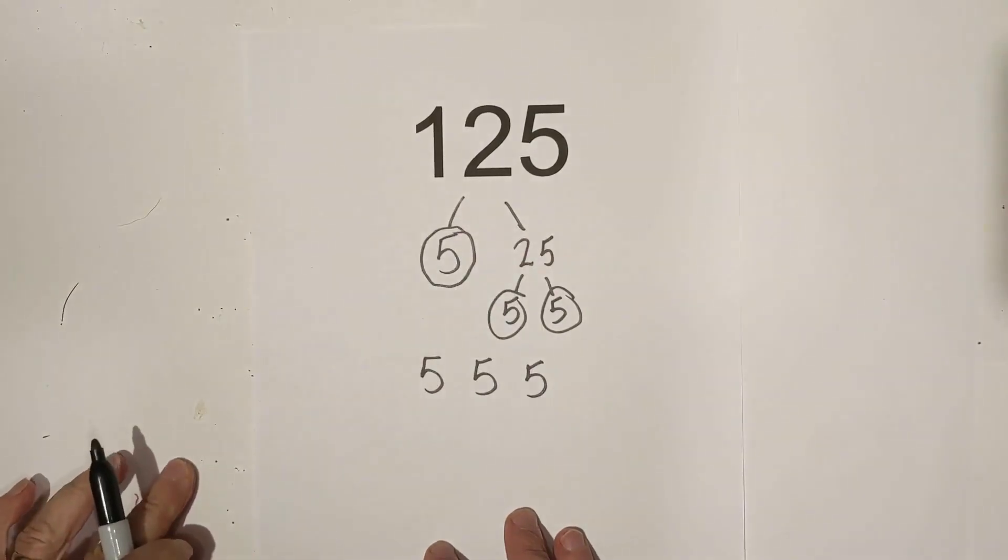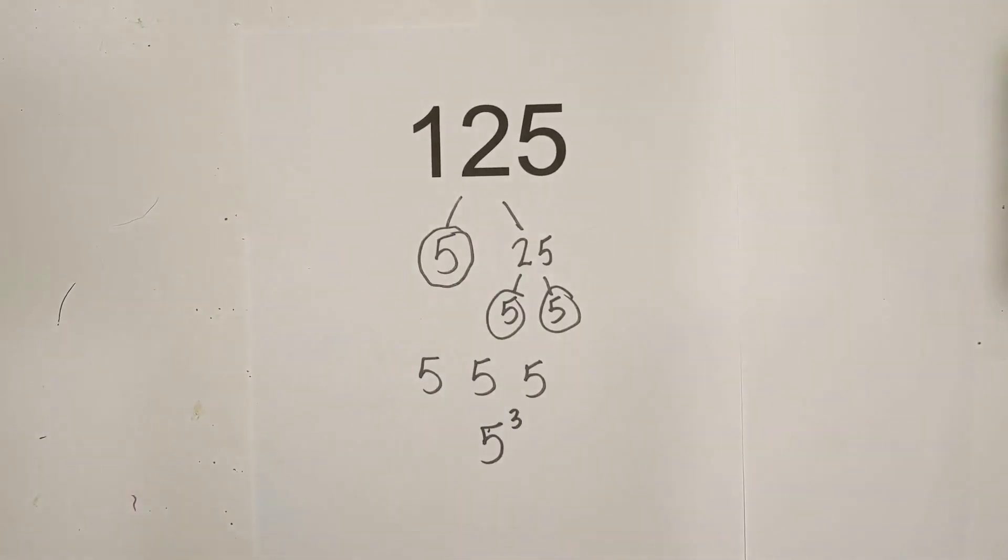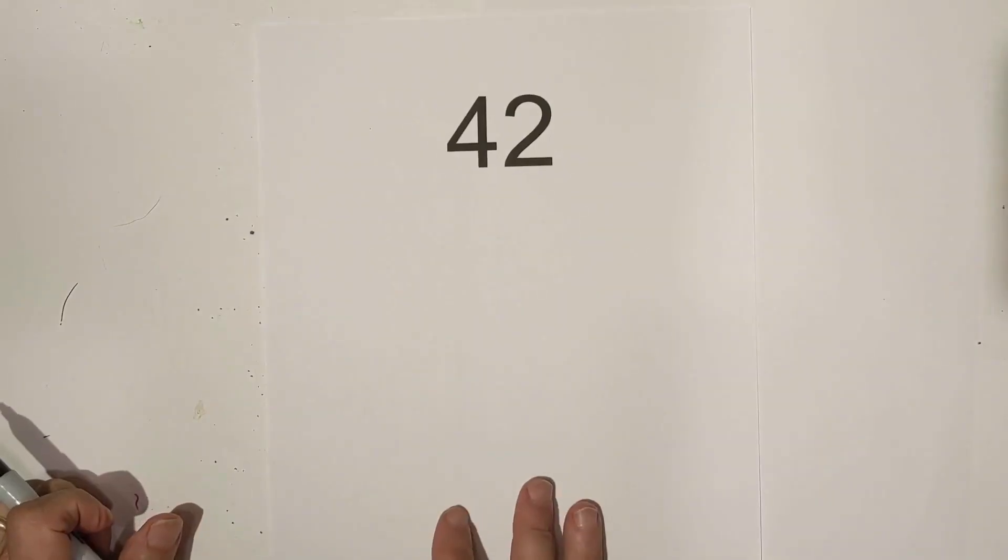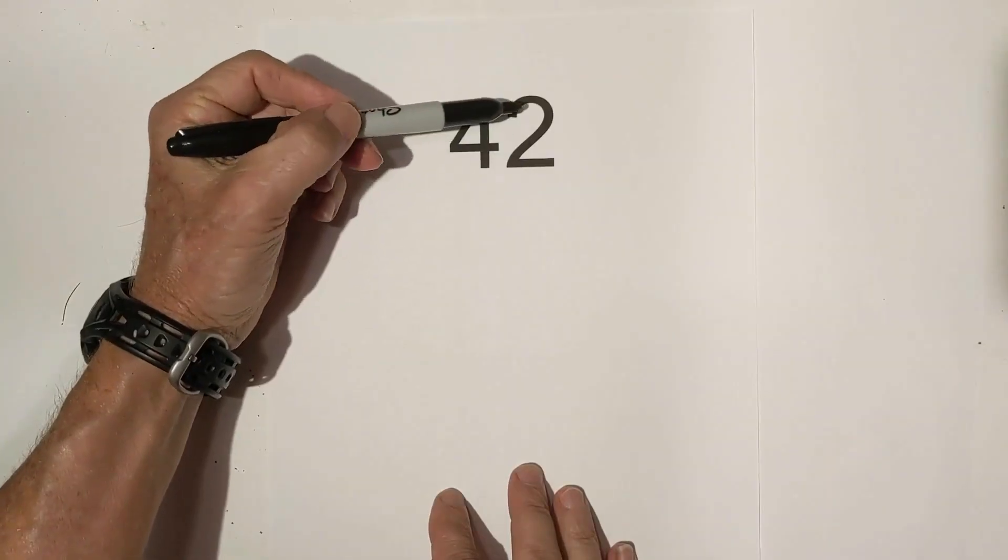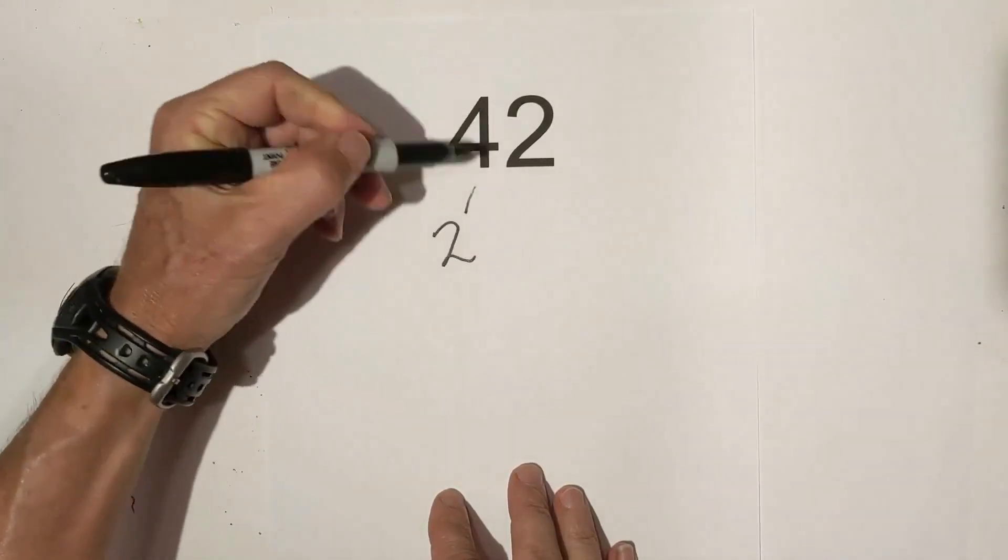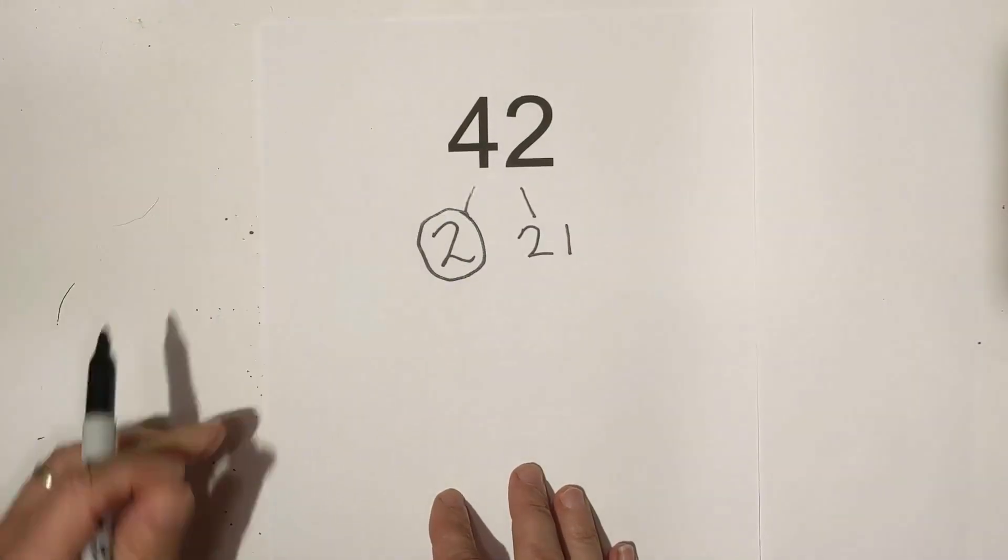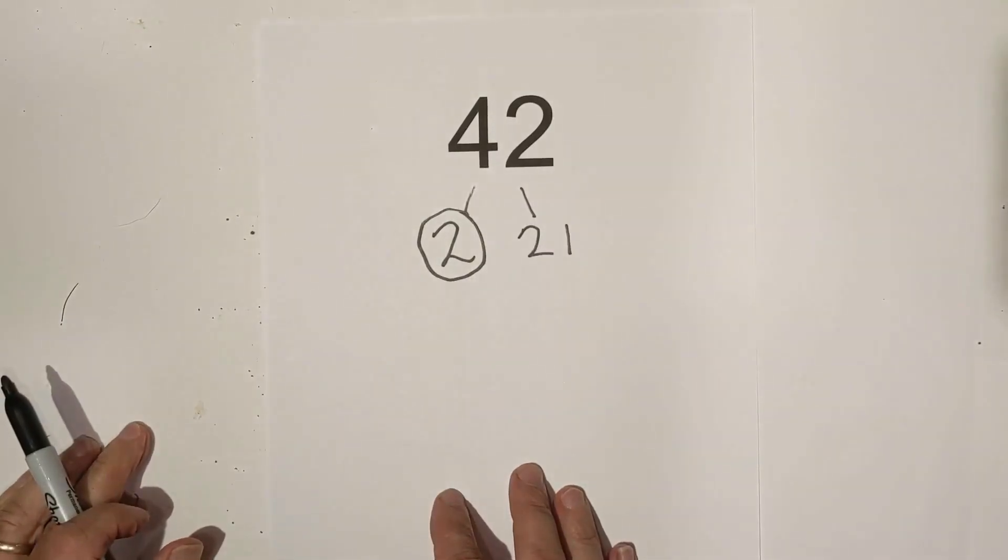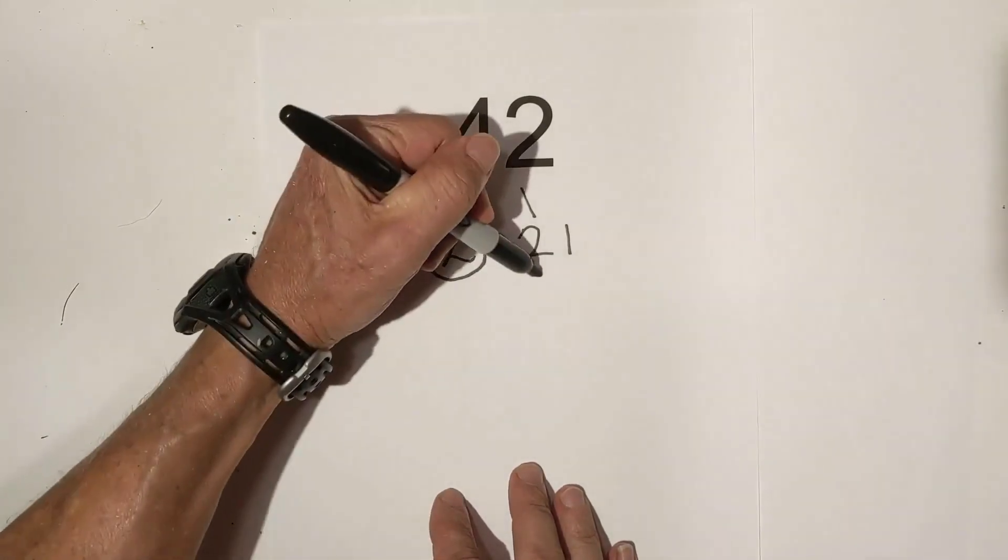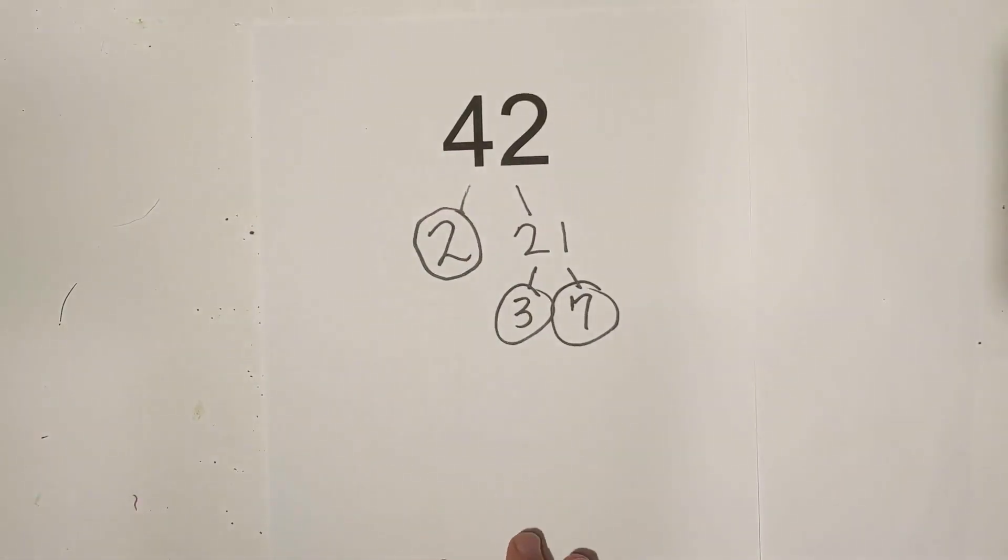Okay, one more. We have 42. It's an even number, so I'm gonna begin with two. So we have two times 21. Two is prime, so I'm gonna circle that. Now we have an odd number, so I'm gonna see if three divides into it. And I know that three times seven is 21, so the factors of 21 are three and seven, and I know they are both prime.